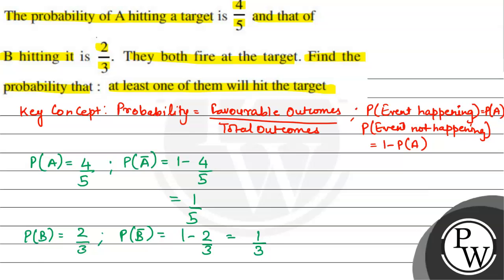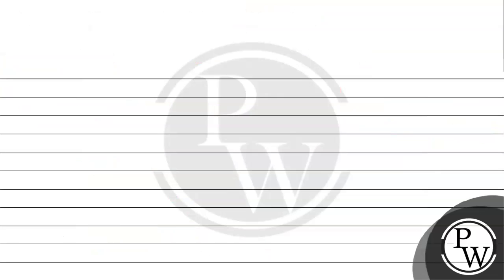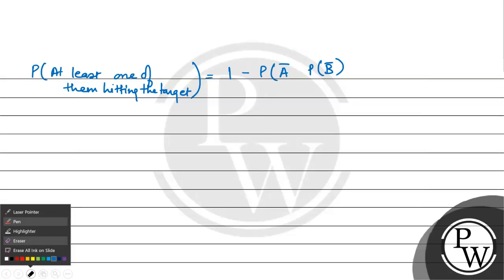We need at least one of them to hit the target. At least means one or more than one. The probability of at least one of them hitting the target is 1 minus probability of A not hitting the target multiplied by probability of B not hitting the target.